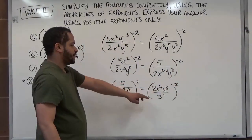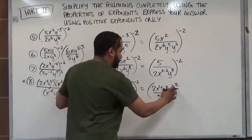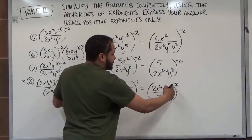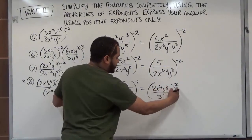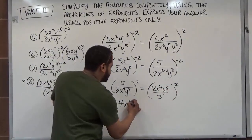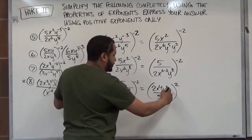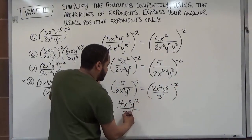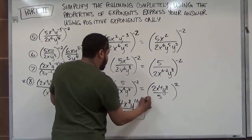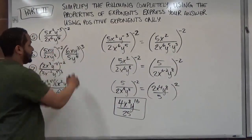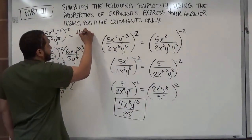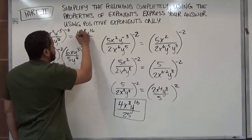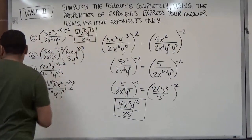Now we just do the perfect square — raise everything to the second power. 2 squared gives us 4. x to the fourth: the exponents multiply, so 4 times 2 gives us x to the eighth. y to the eighth times 2 becomes y to the sixteenth. All over 5 squared, which is 25. That's our solution for the first problem: 4x to the eighth, y to the sixteenth, over 25.